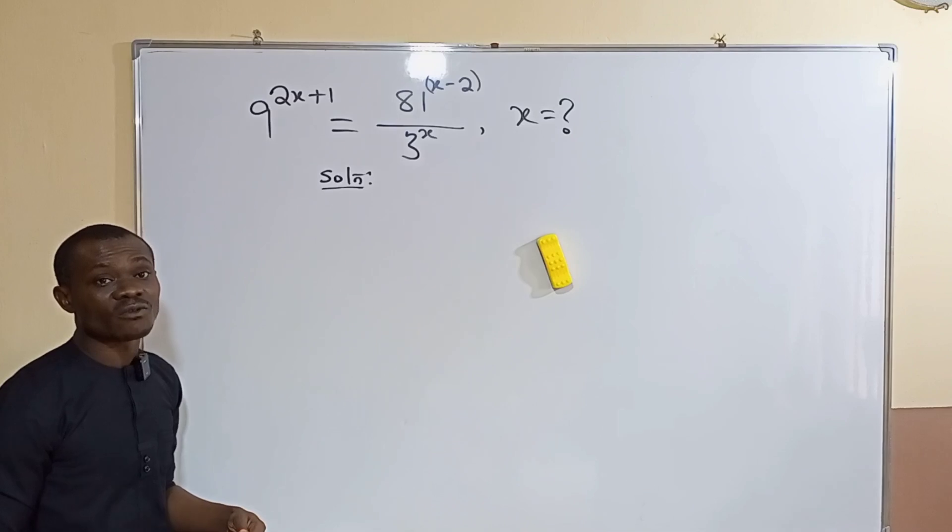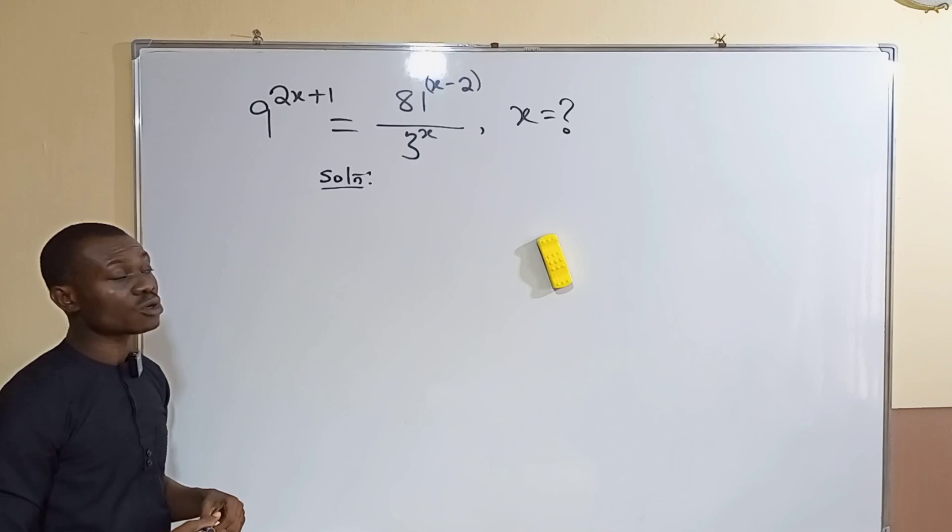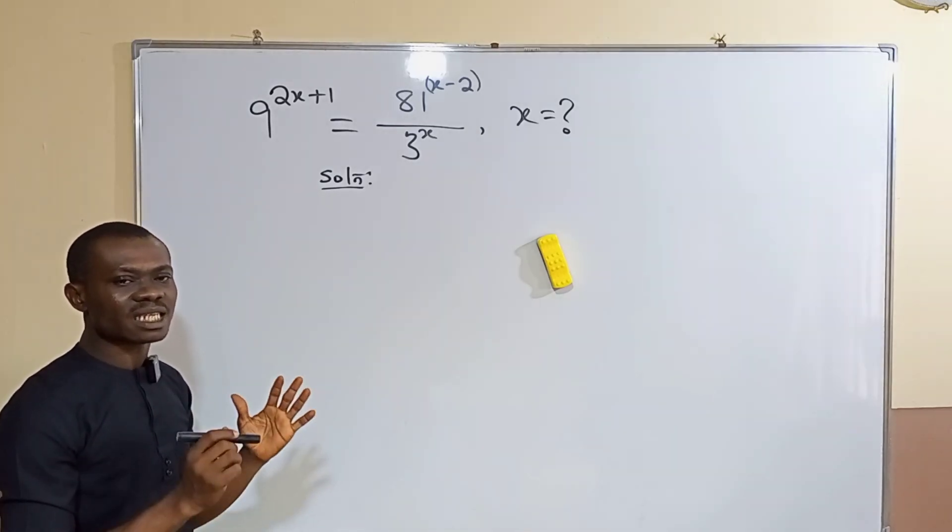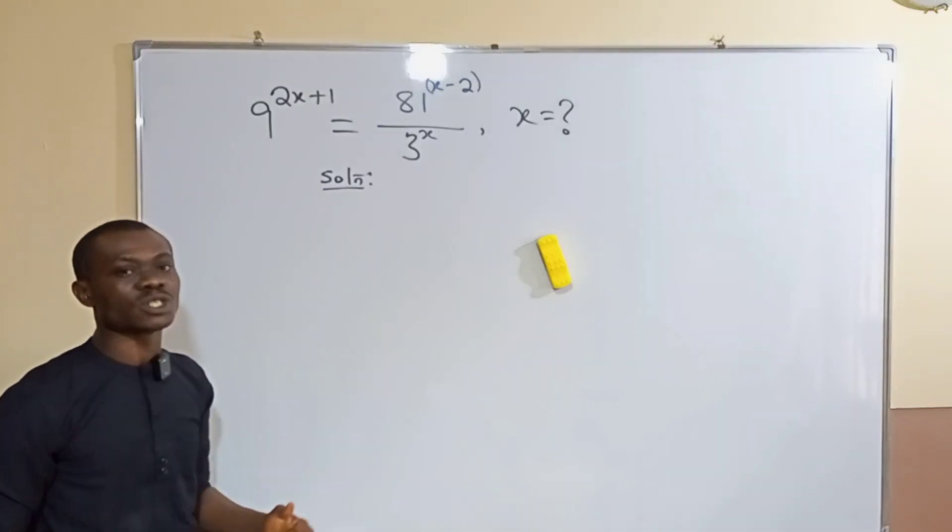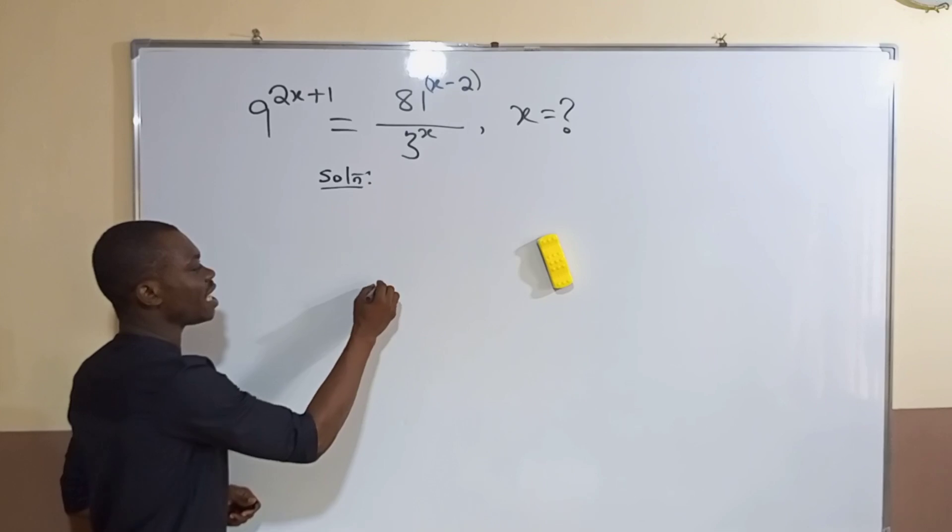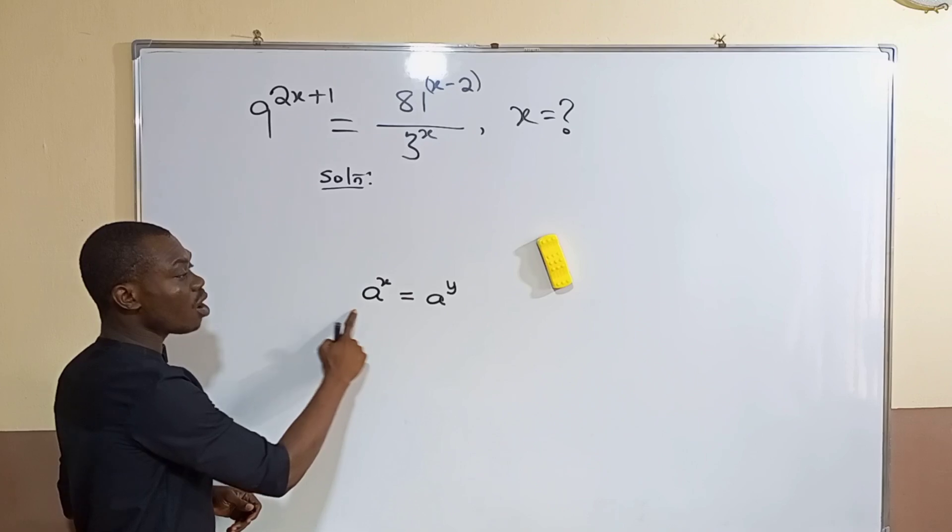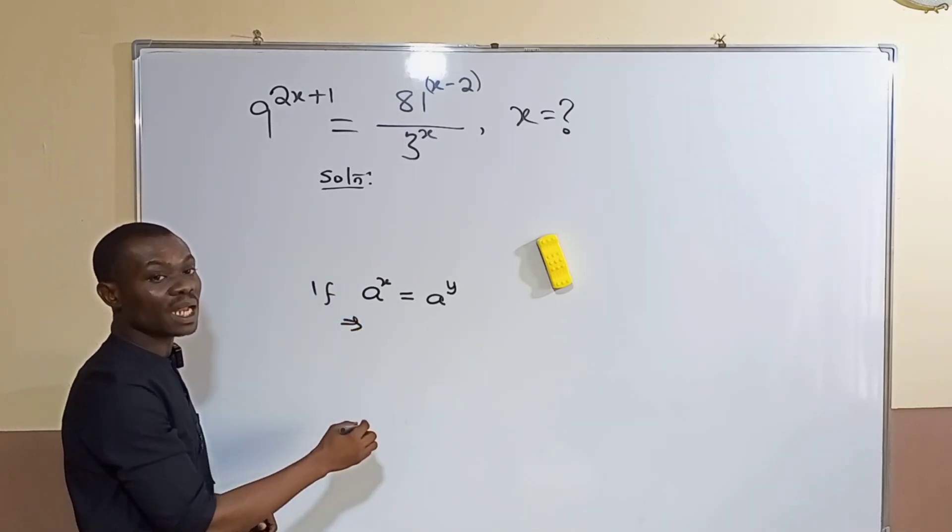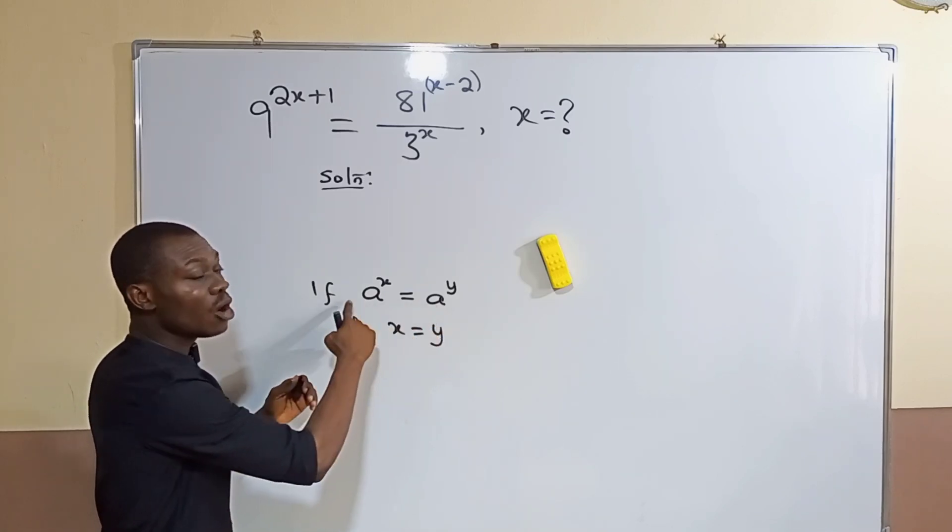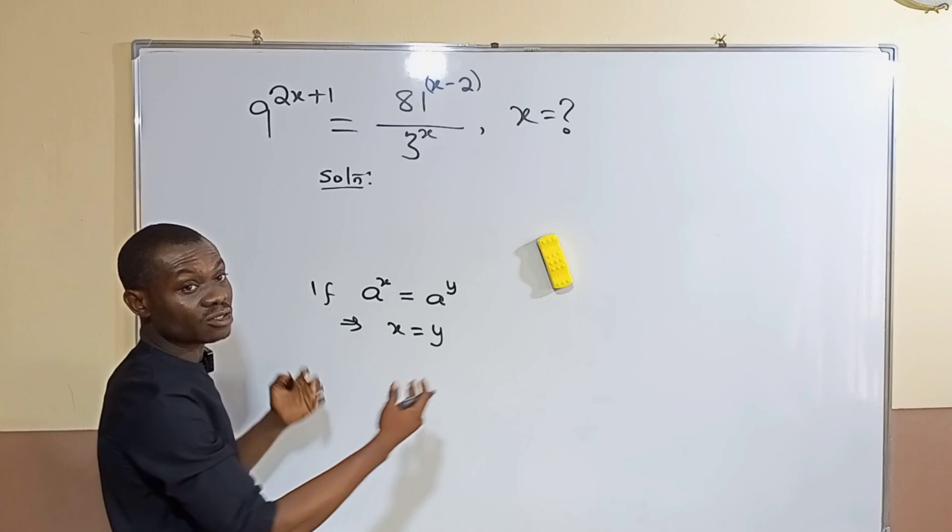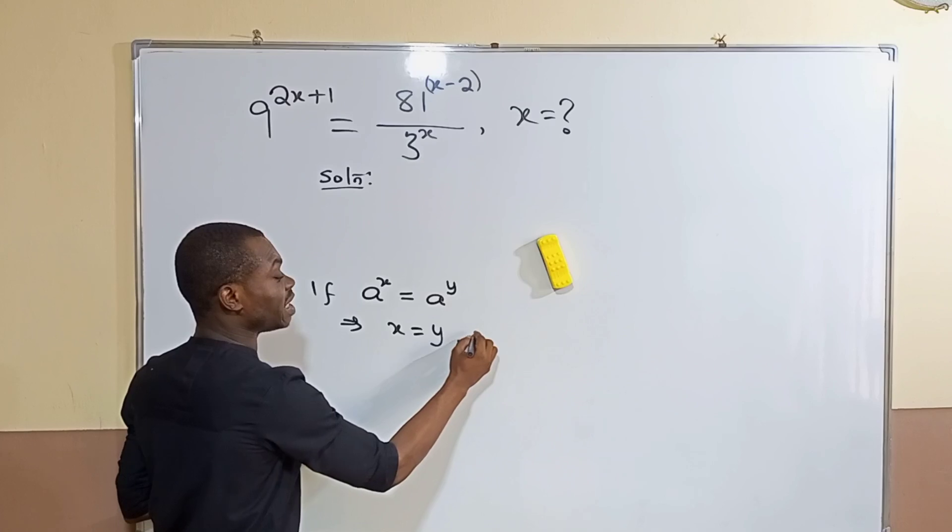This is an example exercise from one of my videos and one of our viewers is asking for the solution. This is the initial equation which we also call an exponential equation. I said in that video that one of the rules of indices that will always help you handle exponential equations is the rule that says if a raised to the power of x equals a raised to the power of y, then it implies that x equals y. That means when the bases of two index numbers on both sides of an equation are the same, therefore their powers are the same.